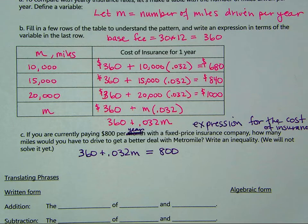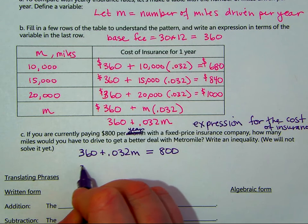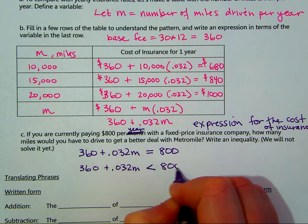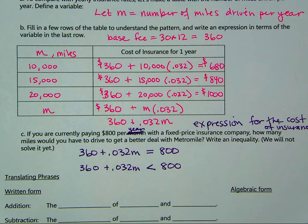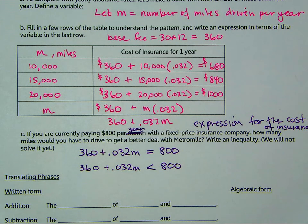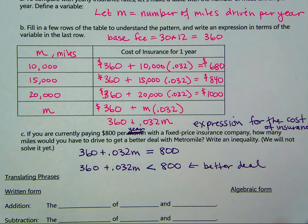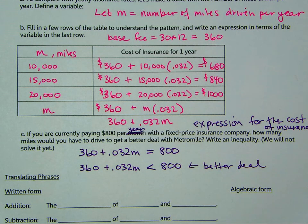We could also use an inequality. If it says 'get a better deal with Metro Mile,' you'd write 360 plus 0.032M strictly less than 800, meaning Metro Mile costs less than $800 per year. Or less than or equal to if you want the same or less. Better deal implies the inequality; if the problem said 'the same,' you'd use an equal sign. You'll see different wording that implies different symbols.